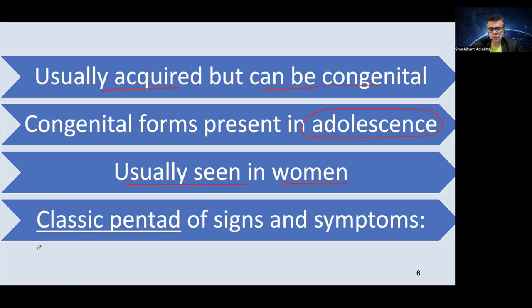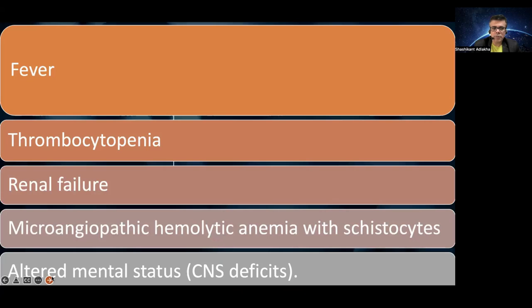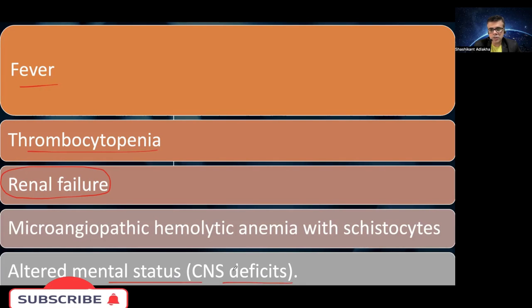The classical pentad of signs and symptoms is exhibited in most cases. The pentad includes: fever; thrombocytopenia, due to platelets being consumed in the microthrombi — it may be fatal when the platelet count drops below 50,000 per cubic millimeter, at which point the patient may start manifesting with bleeding; renal failure, as renal blood vessels become clogged by microthrombi; and CNS deficits such as altered sensorium and other neurological signs, due to CNS blood vessels being clogged.